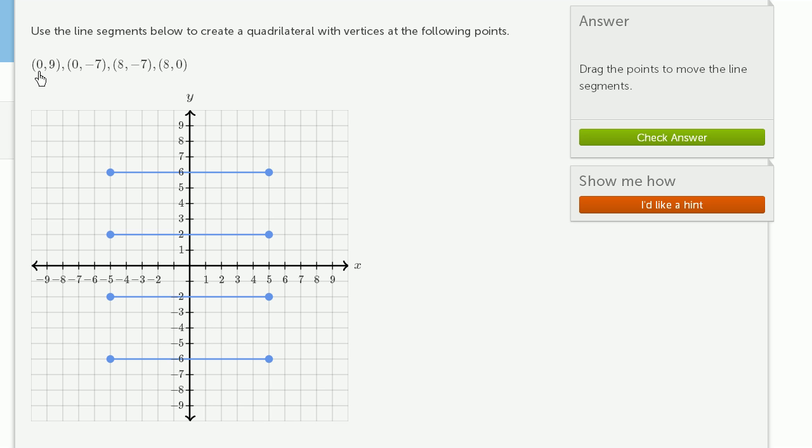So one is at the point (0, 9). Our x-coordinate is 0, so we're at 0. And then our y-coordinate, or our vertical coordinate, is 9. So we need to have a vertex right over here.